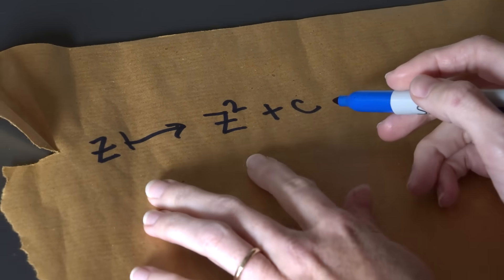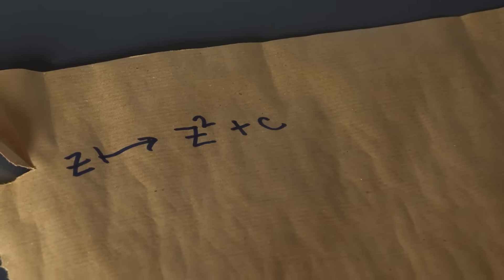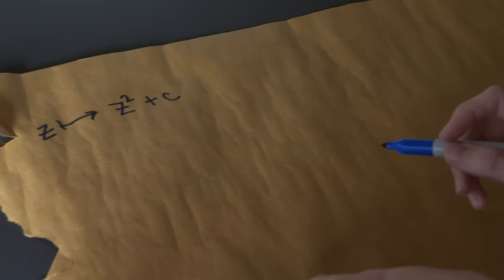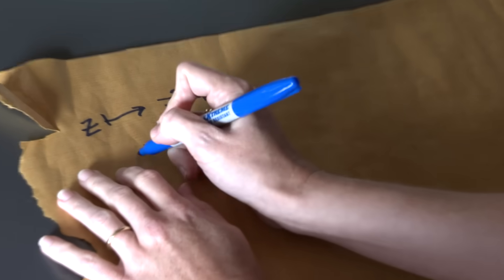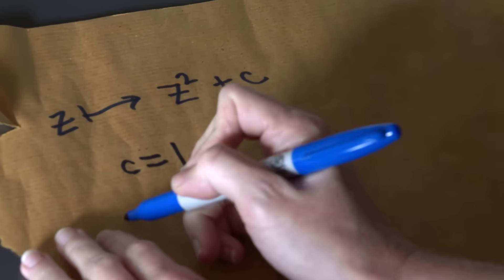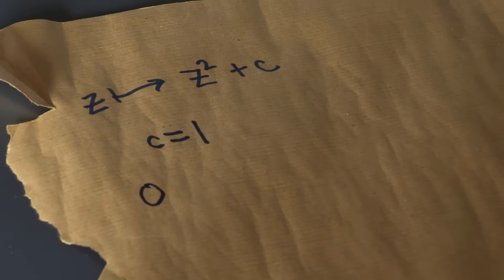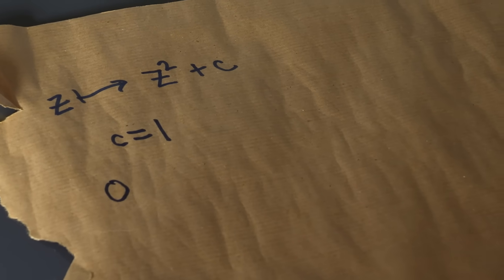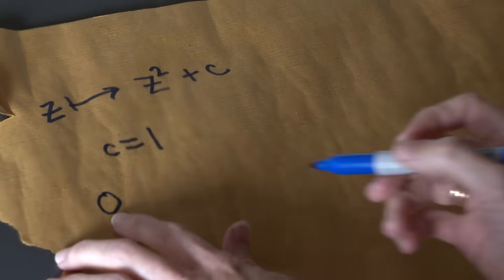And so we've looked at this kind of thing before, but just to take a quick look at some of the behavior that occurs. So for example, if c is equal to 1, and let's say we start with the number 0, then if I repeatedly apply this rule, if I iterate the function, let's see what happens.